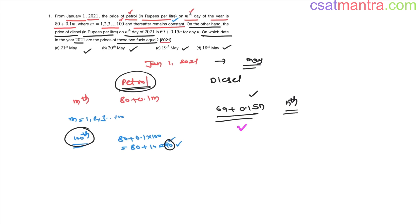So 69 + 0.15n is equal to 90. Now 0.15n is equal to 90 minus 69, that is 21. Simplifying this further, 0.15 you can write as 15 by 100 into n, that is equal to 21. Now 5 3s are 15, 3 7s are 21. So n is equal to 7 into 20. When you take 20 to the numerator, 7 times 20 is 140.